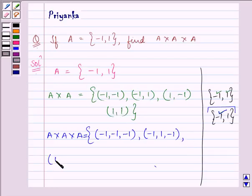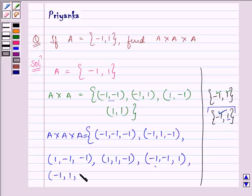Proceeding on, (1, -1, -1), (1, 1, -1). Now, each element will be paired with the second element. And this is how we will make four more elements for set A × A × A. Then, (1, -1, 1), (1, 1, 1).